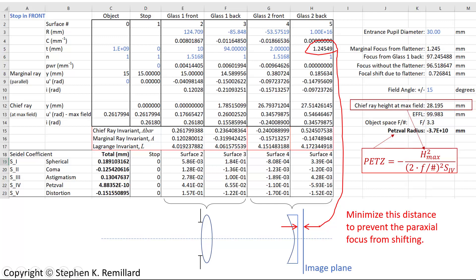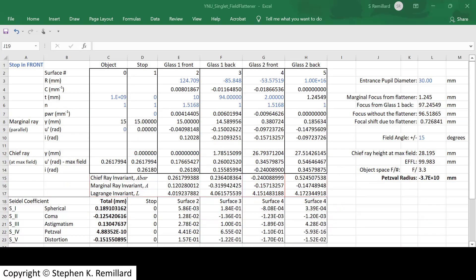Petzval radius depends on the Seidel aberration coefficient for field curvature in the denominator. So you want that to get as close to zero as possible because you want a Petzval radius to be infinity so that the image plane is flat. It also depends on the height of the image. The taller the image, the harder it is to claim that your image surface is flat. That's the consequence of the H max squared here, where H max is the height of the chief ray at maximum field. It's the largest the image gets.